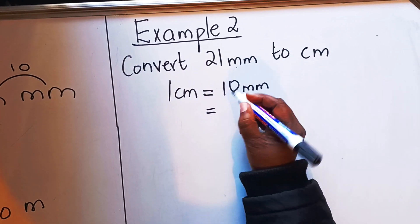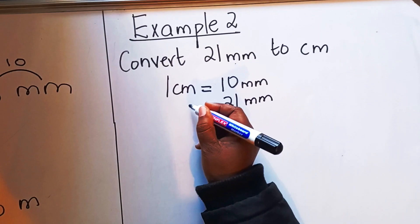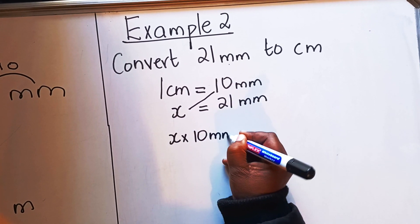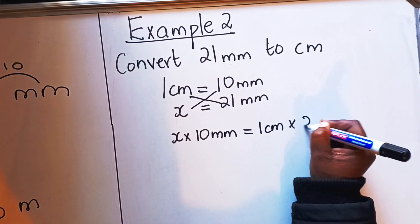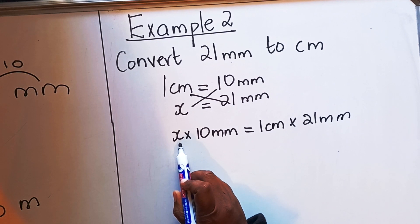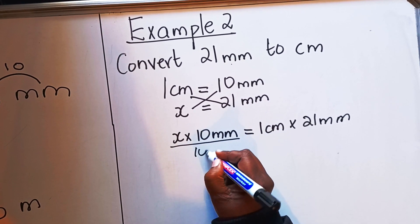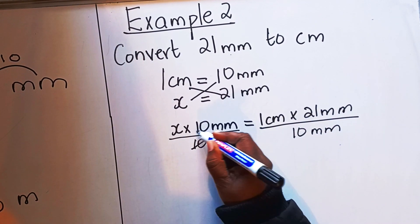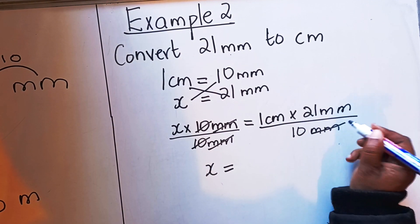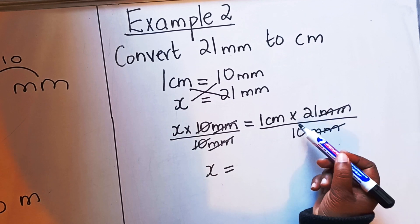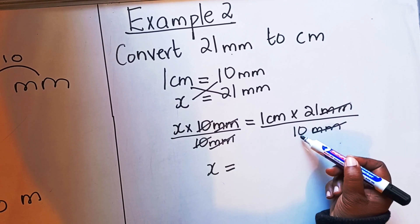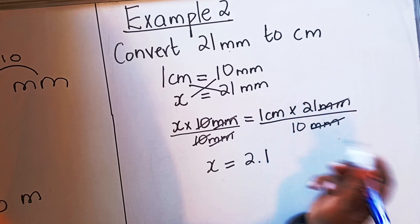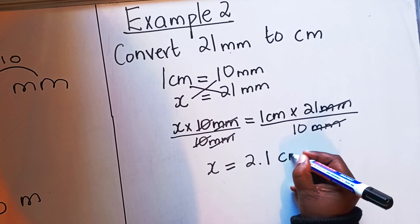Write 10 millimeters. Then write 21 millimeters under the millimeters column. What are you required to find? Call it x. Cross multiply: x times 10 millimeters equals one centimeter times 21 millimeters. To leave x alone, divide both sides by 10 millimeters. The 10 cancels the 10, the millimeters cancel the millimeters. You're left with x equals 1 times 21 divided by 10.